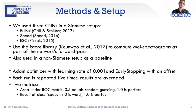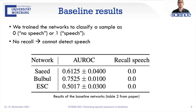The counter for early stopping starts only after this given number of update steps is completed. We repeat each run five times and average the results. For metrics, we use the area under the ROC curve, ranging from zero to one, where zero is worst, 0.5 is random guessing, and one is perfect. We are also particularly interested in the recall of the speech class, since high recall means the algorithm is well suited to detect the presence of speech. As seen in the baseline results — where networks directly classify samples as zero (no speech) or one (contains speech) — the recall is very low, meaning we cannot use these networks to detect the presence of speech.